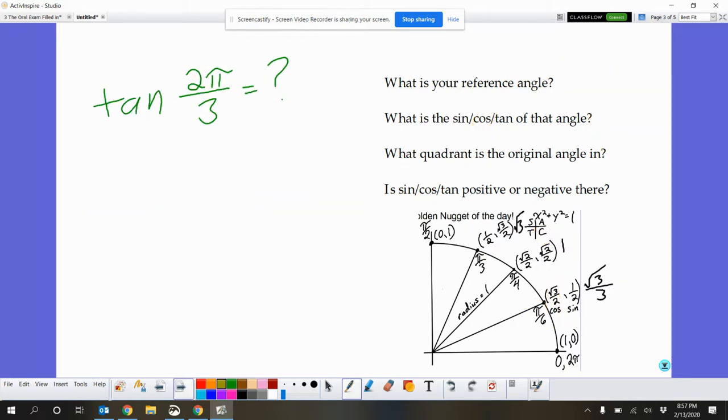Last one, I'll do a tangent. So once again, what is my reference angle? In this case, pi over 3. Then what is the tangent of that reference angle? So there's pi over 3. Tangent, I've tacked it on. I realized it wasn't in the other ones, is square root of 3. It's one of the ones that's not a fraction.